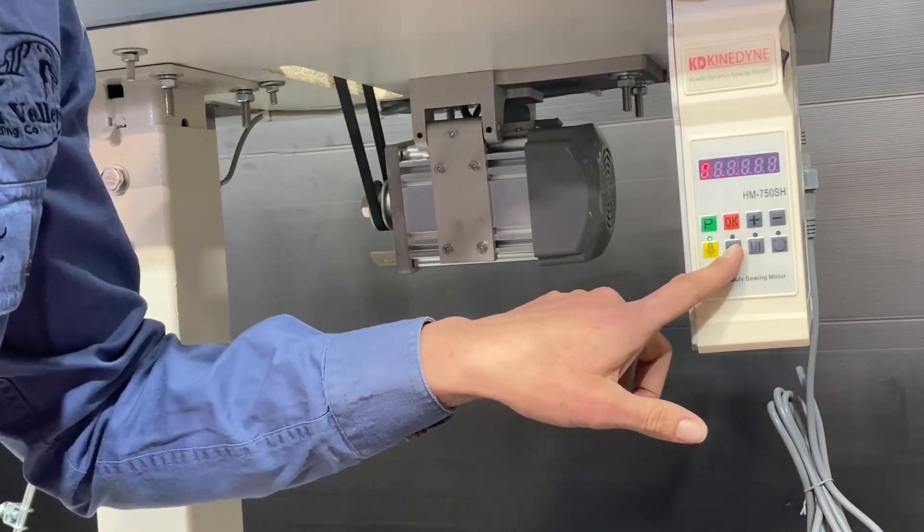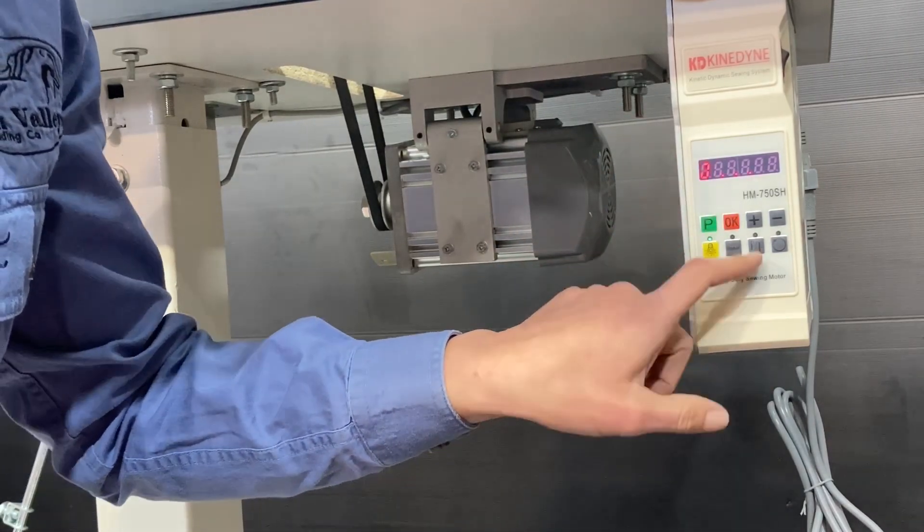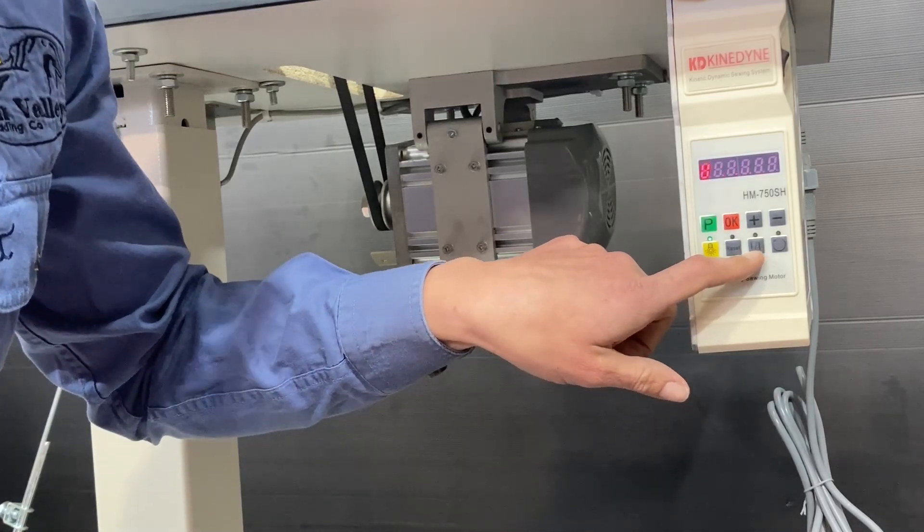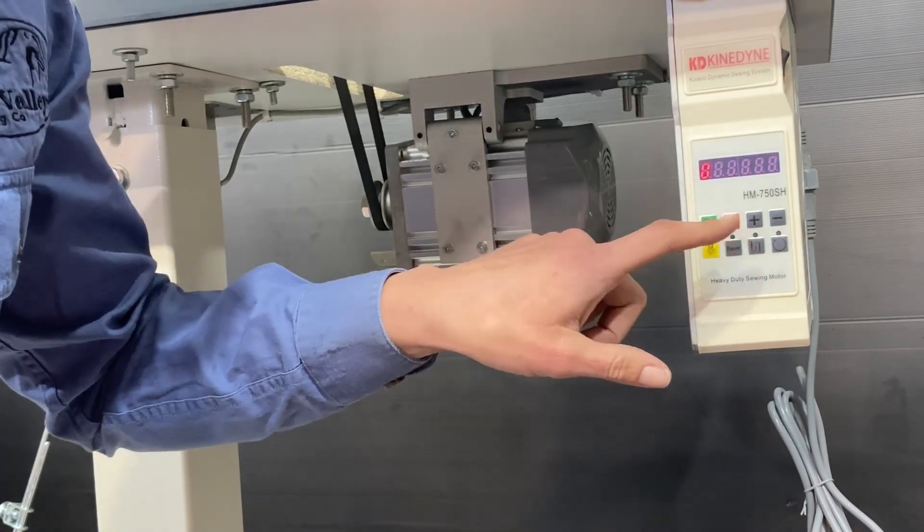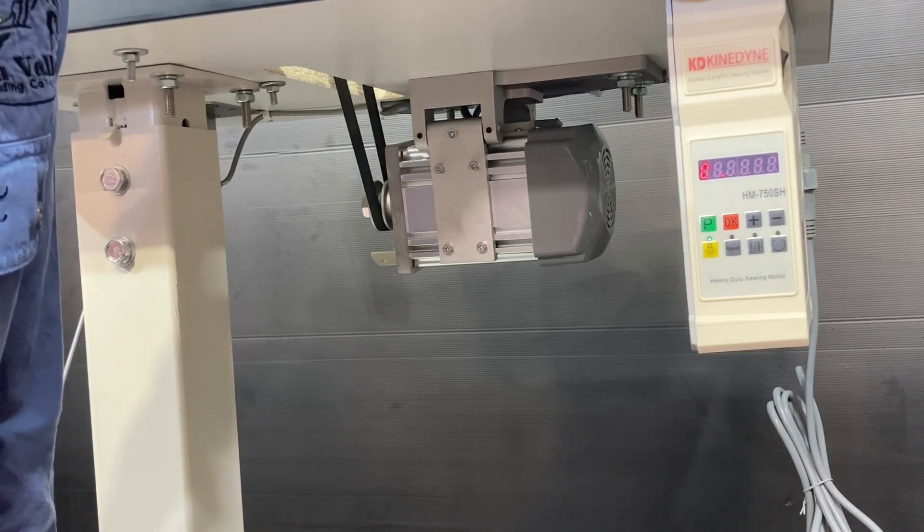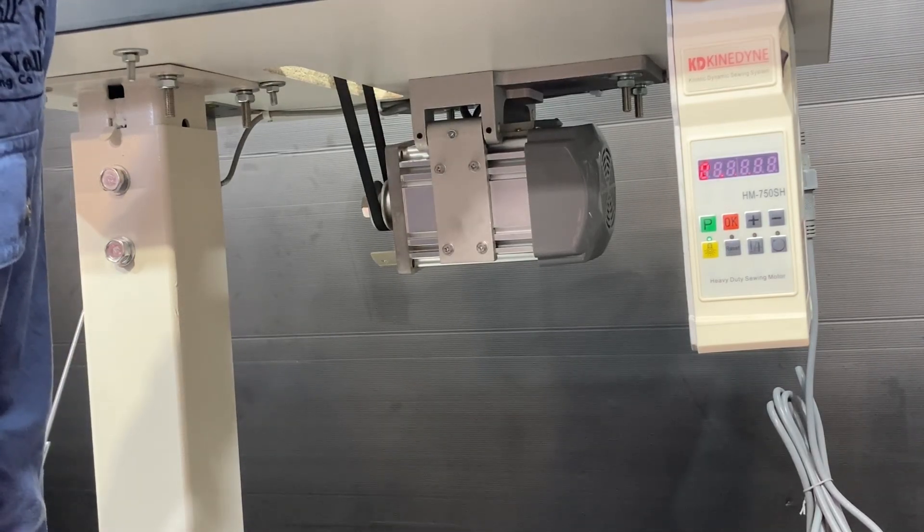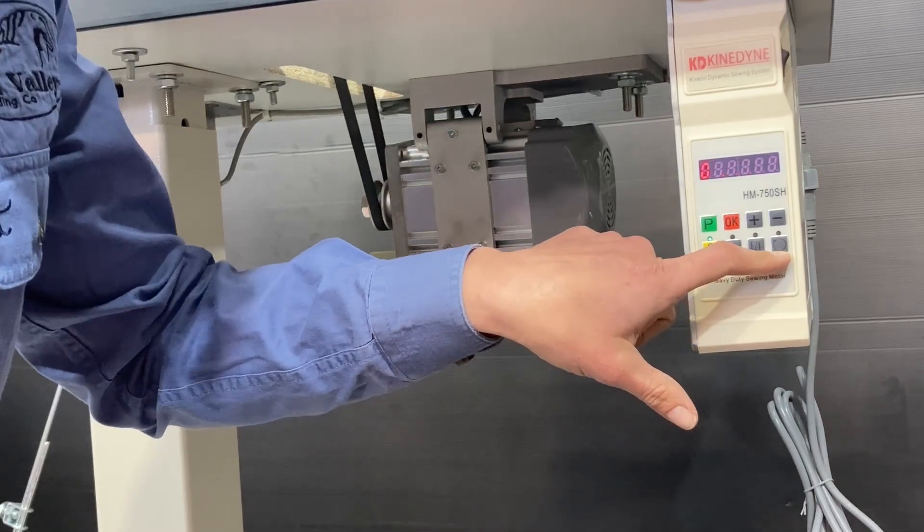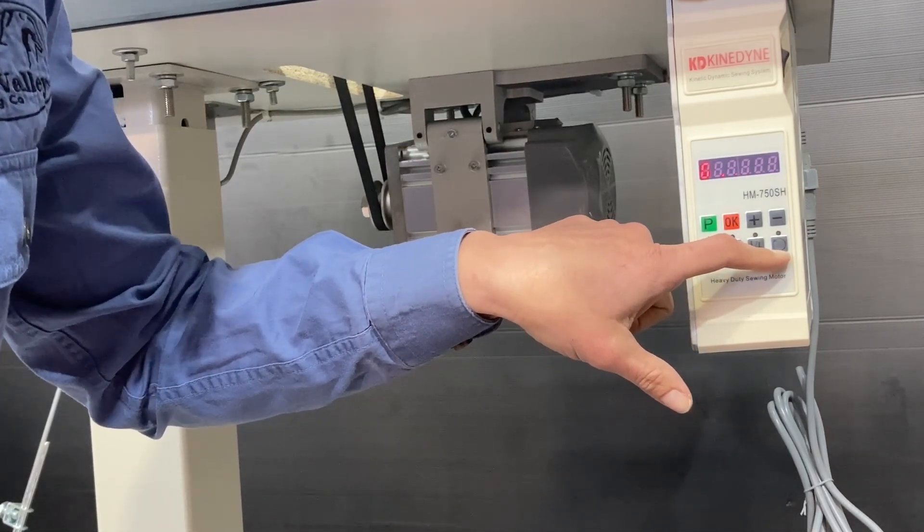Reset puts the factory settings back to it. This one is the needle up or down controller if you have the electronic needle positioning set up. And this one here is the direction of rotation.